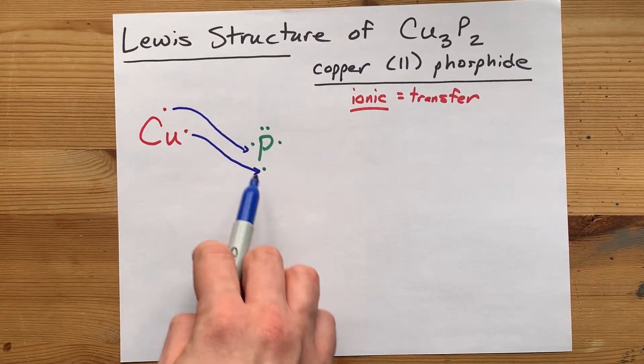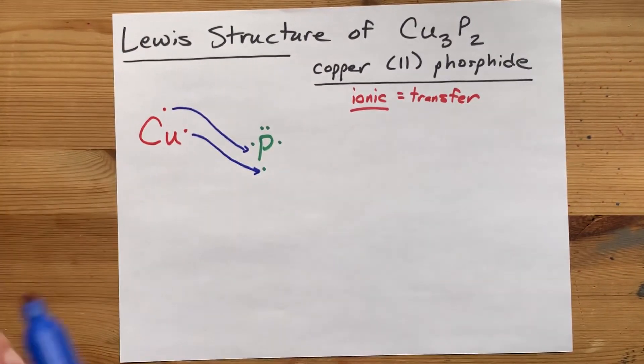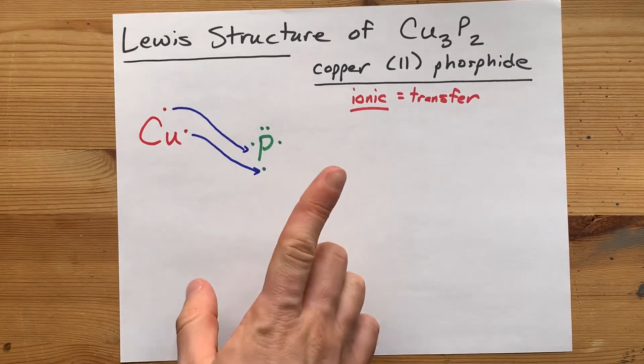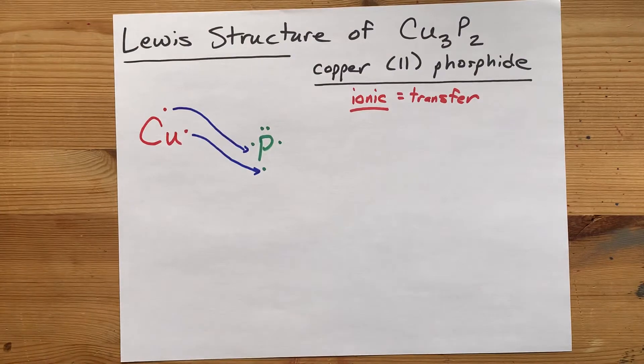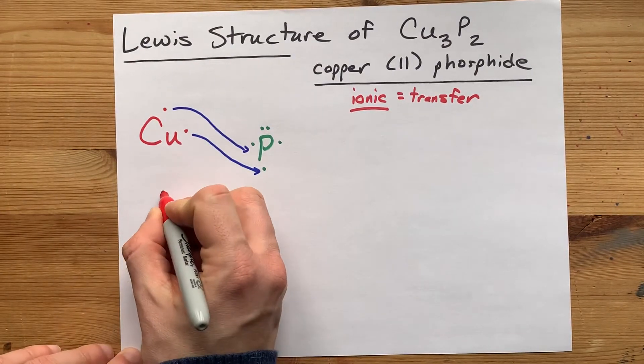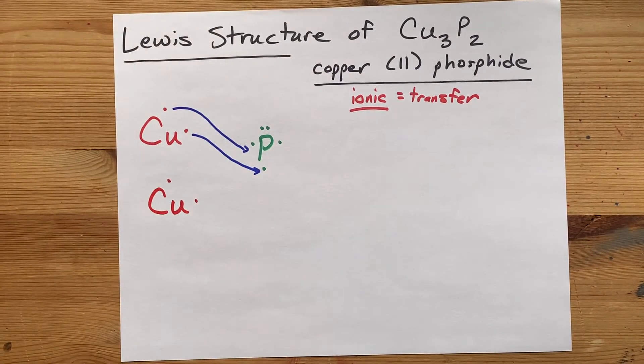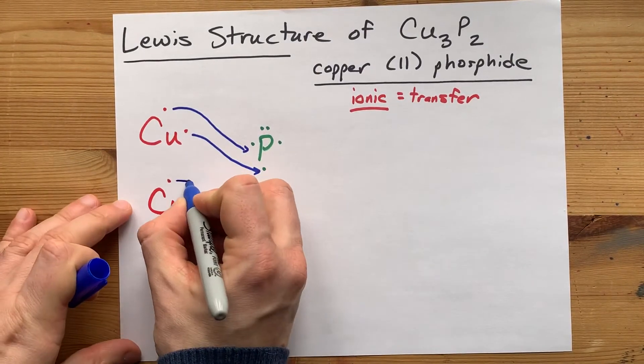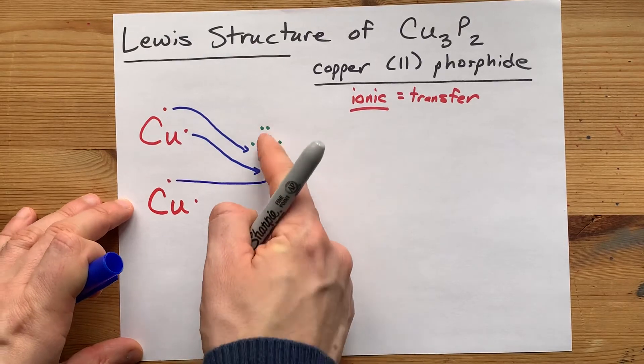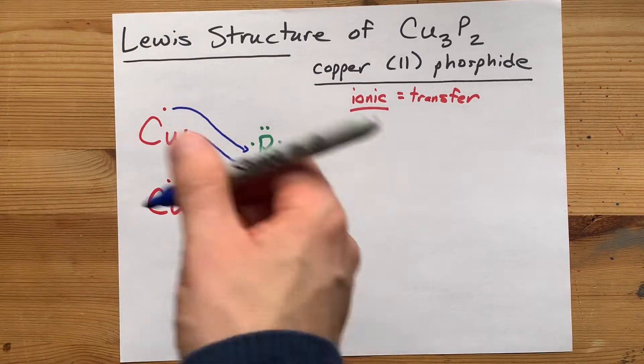But unfortunately, this phosphorus is not yet satisfied. It needs a full eight electrons, and it currently has five plus two is seven. So bring in another copper, one, two electrons in its outer shell, just like that one. And it can contribute that eighth electron to make that phosphorus stable. Great.